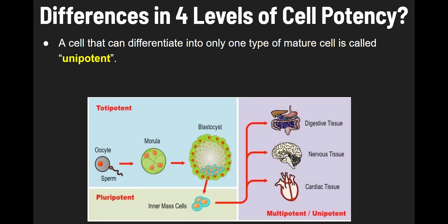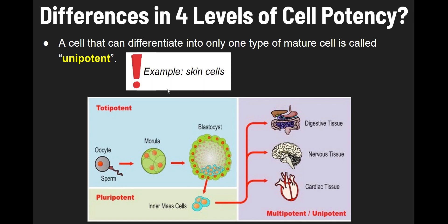These pluripotent cells can give rise to multipotent cells. An example would be cells that differentiate into the different types of cells found in the digestive tissues. Those multipotent cells can then give rise to unipotent cells. By the time you get to unipotent cells, the cell is very specialized — its function and structure are very specific. One example of unipotent cells would be skin cells.